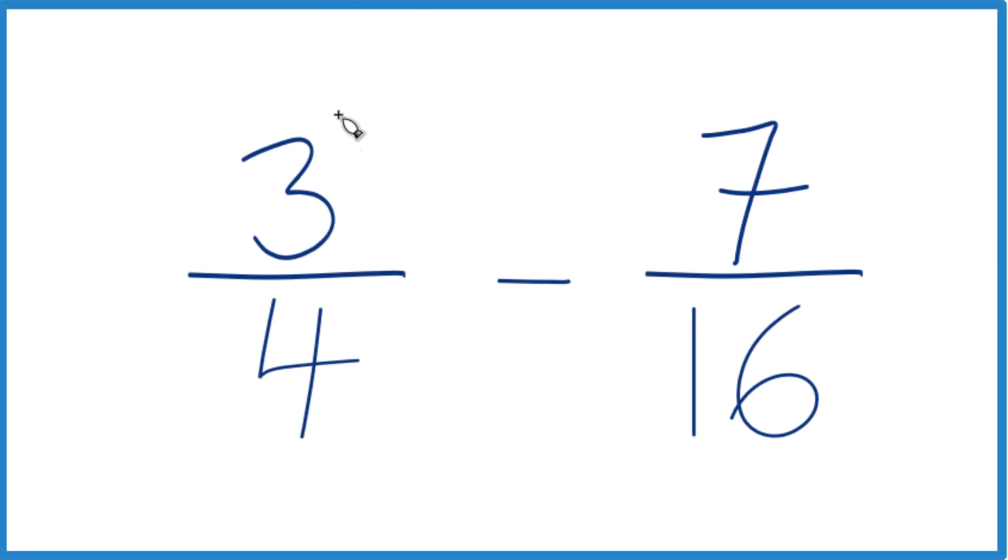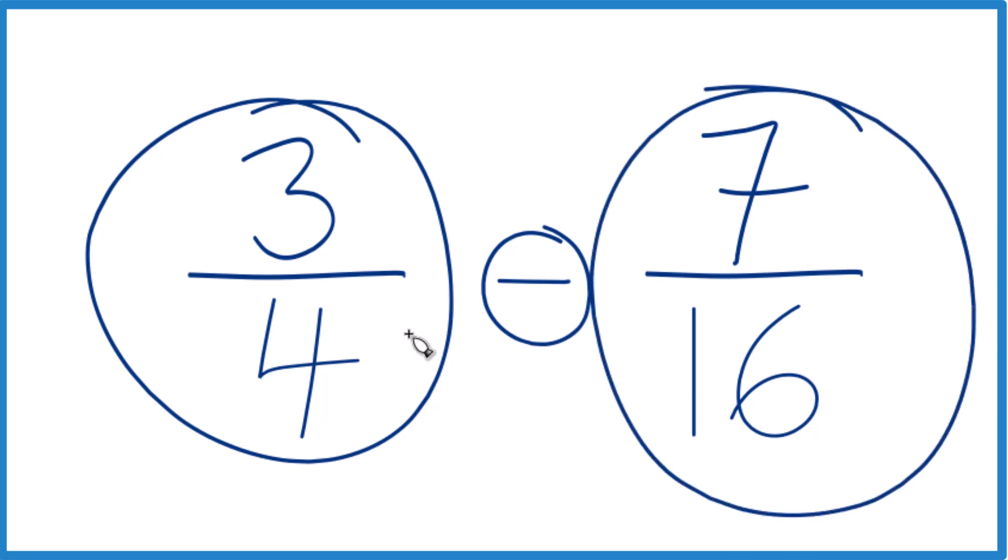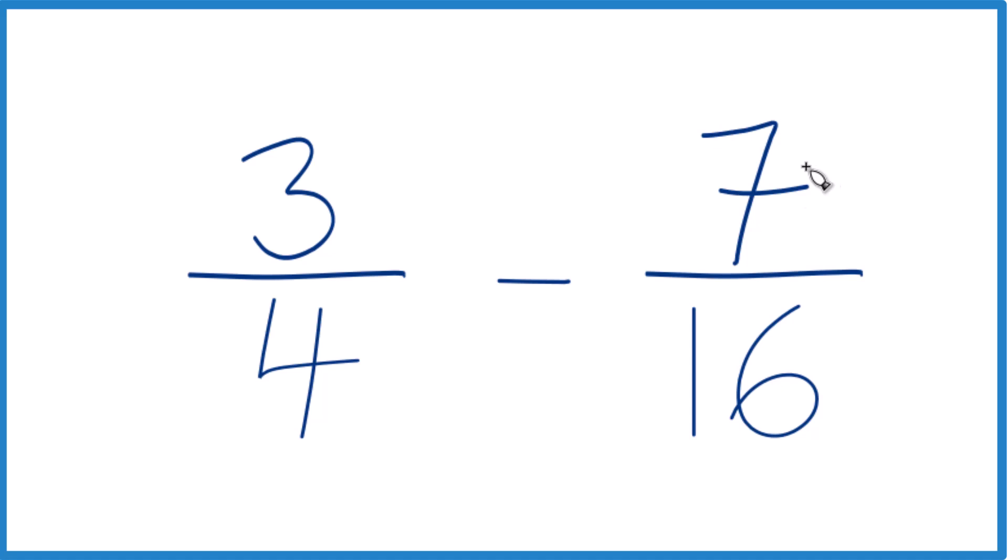So let's figure this out. We've got 3 fourths minus 7 sixteenths. And whenever we are working with fractions, whenever we're subtracting or adding fractions, we need to get a common denominator.